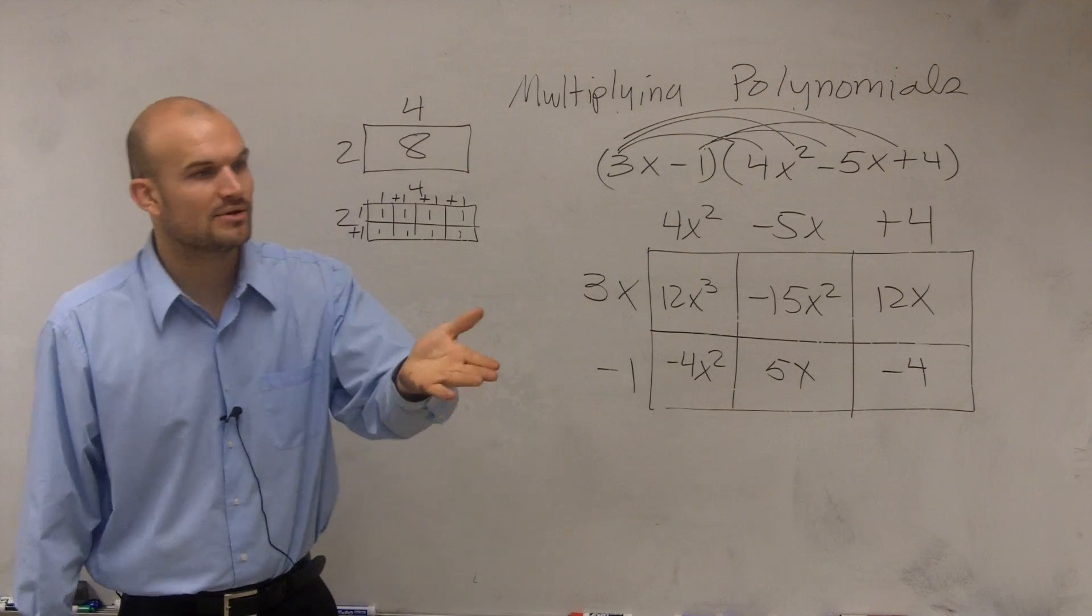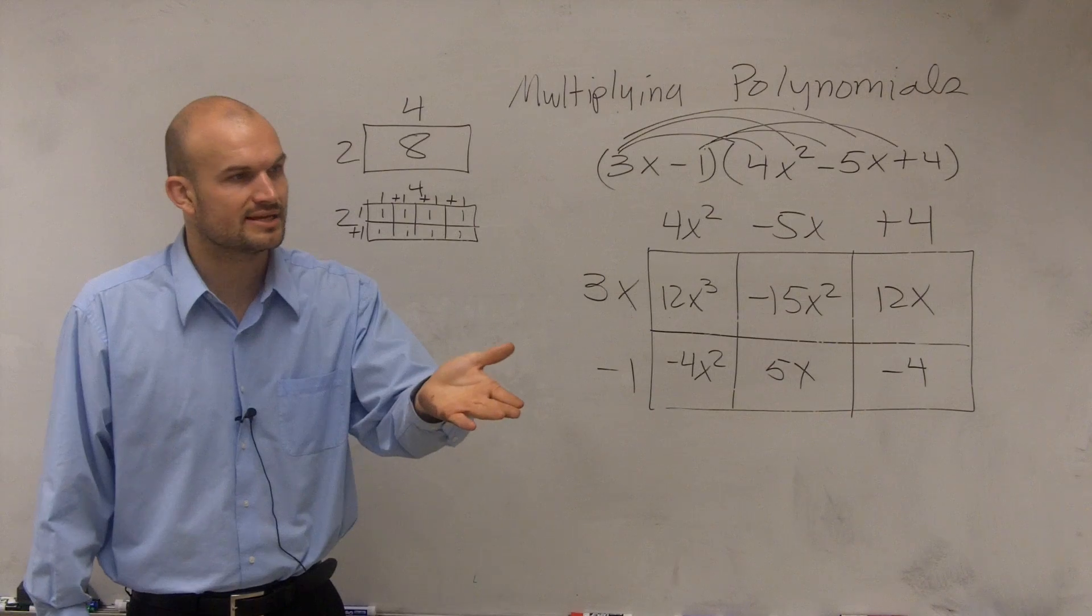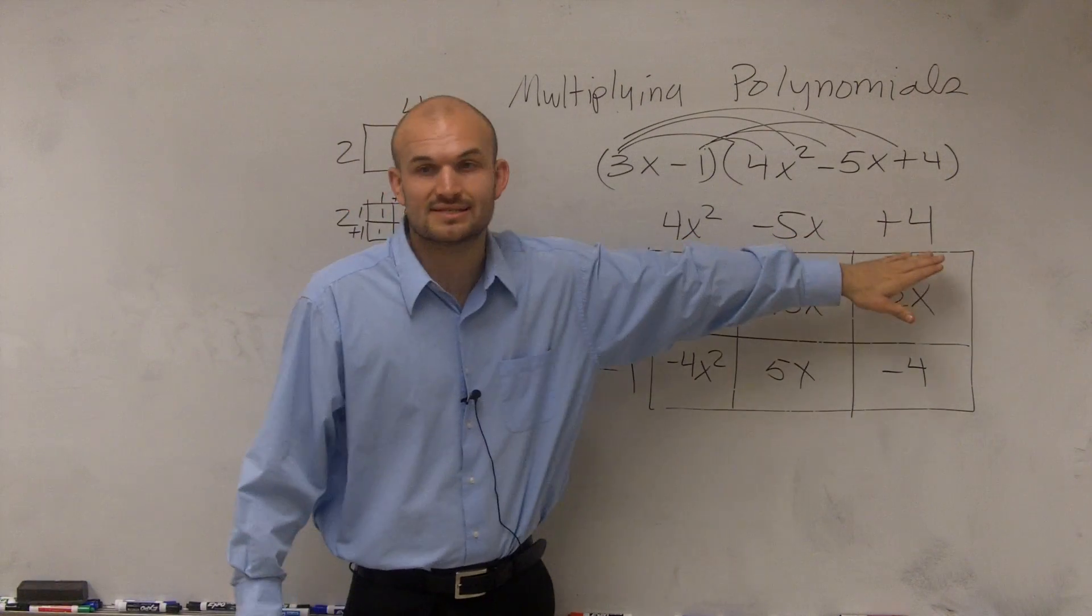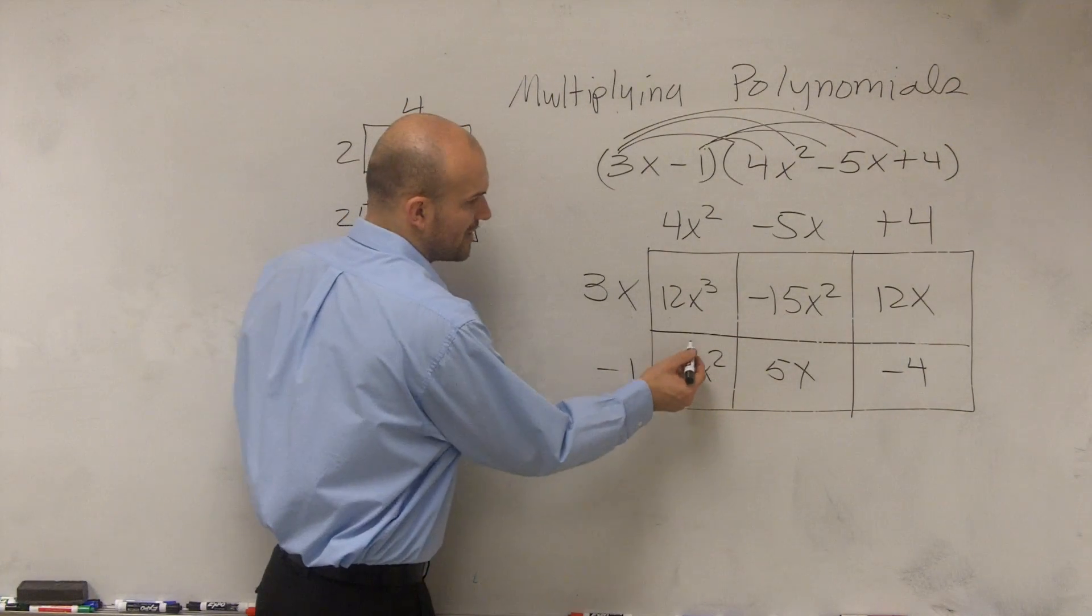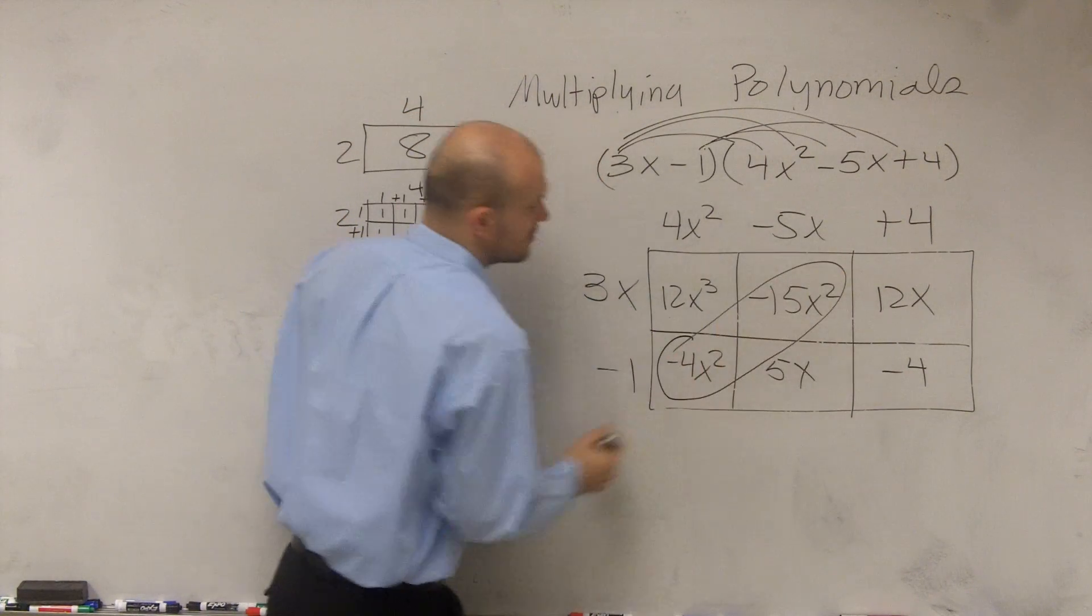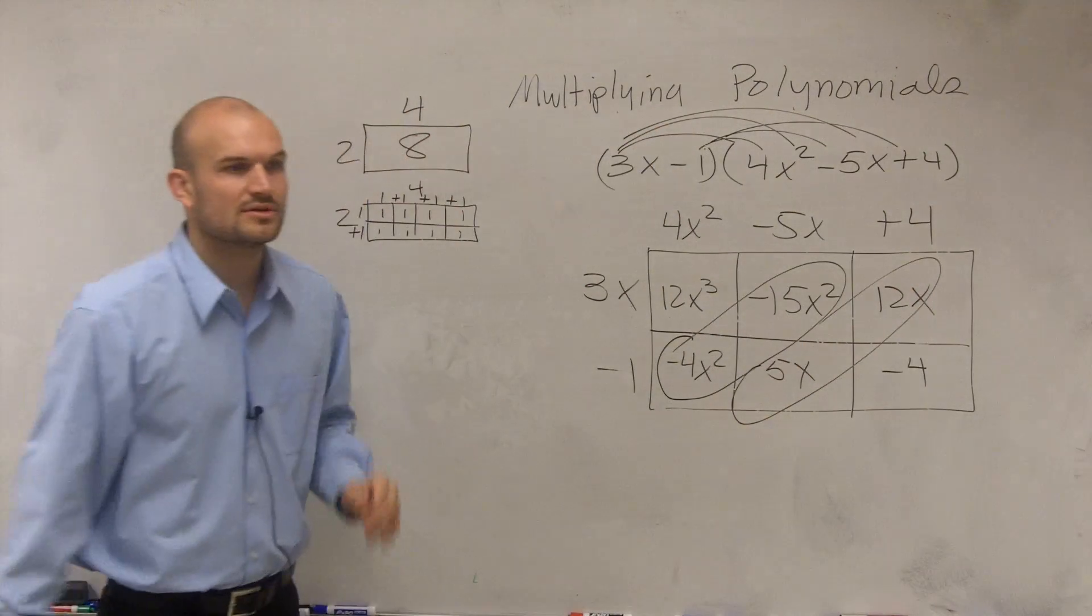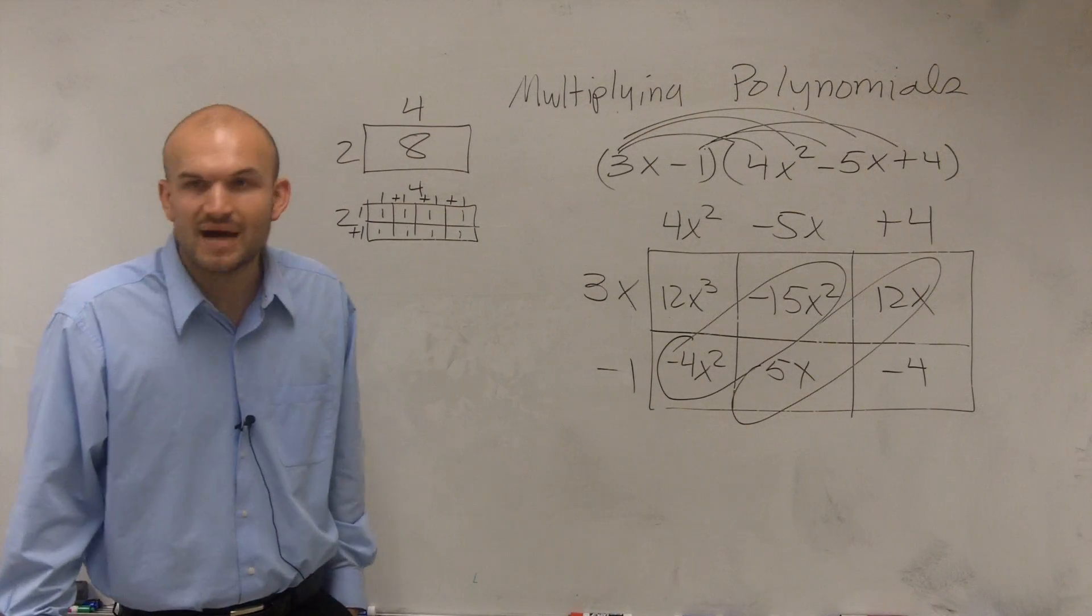Now, remember you asked me why do we need to do things in descending order? Well, it's helpful to have these in descending order because what I notice is I have a couple pairs of like terms. Those are like terms. So since they're like terms, I can combine them.